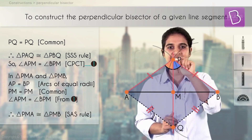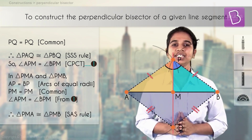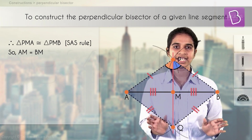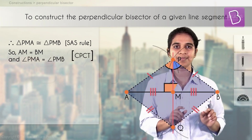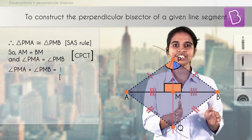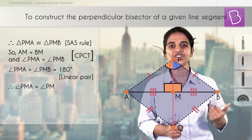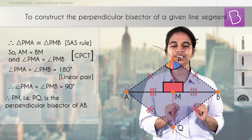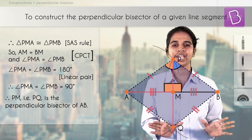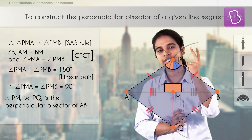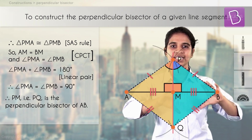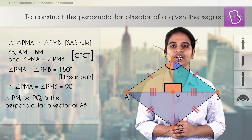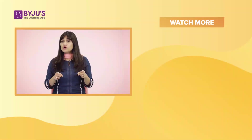These two triangles are congruent by the SAS test. Therefore, AM equals MB by CPCT — proving it's a bisector. Similarly, angle PMA equals angle PMB by CPCT. Since these two angles form a linear pair, their sum is 180 degrees, so each must be 90 degrees — proving it's perpendicular. Two things to prove, two steps: first the big triangle and SSS test, then the smaller triangles and SAS test.